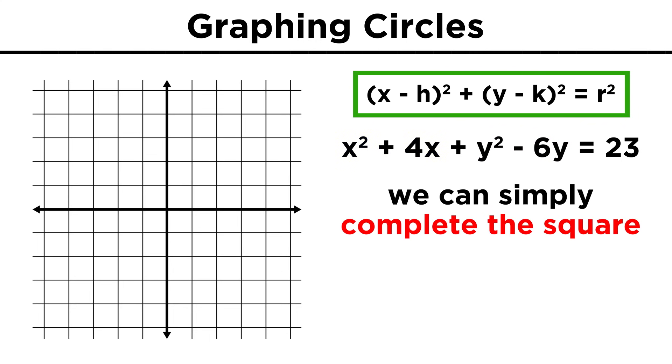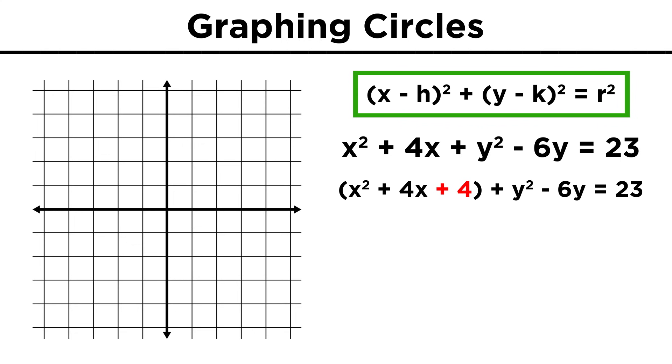Earlier in this course, we learned how to complete the square, and that's exactly what we will do here, but twice, once per variable. If you need a refresher, go back and check out that tutorial now, otherwise we simply notice that for the x terms, we can add four to get a perfect square, making sure to add four to the other side as well, and now this term can become (x plus two) quantity squared.